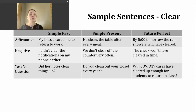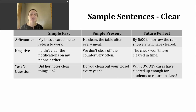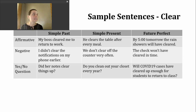Now let's take a look at using the verb clear in a few different verb tenses. Today we'll talk about simple past, simple present, and future perfect. To make an affirmative sentence in the simple past tense, I'm going to use the -ed spelling of my verb, and that's going to be the same no matter what my subject is, whether it's singular or plural. Here's an example: "My boss cleared me to return to work." This goes back to that definition about giving approval — perhaps after someone has been ill or injured.